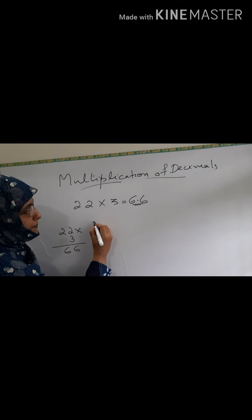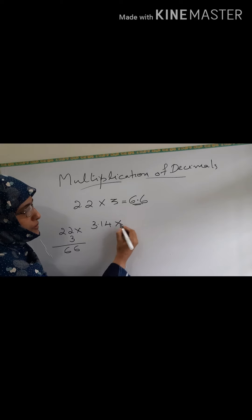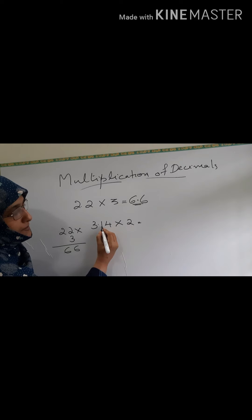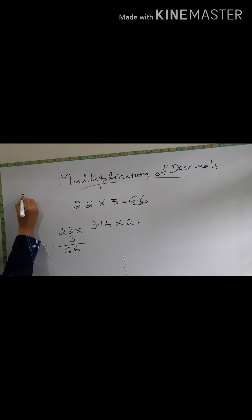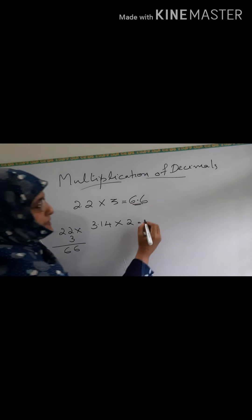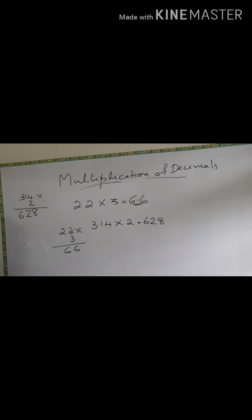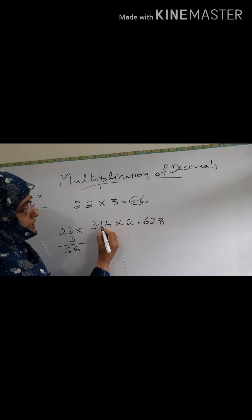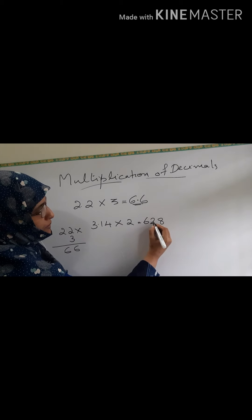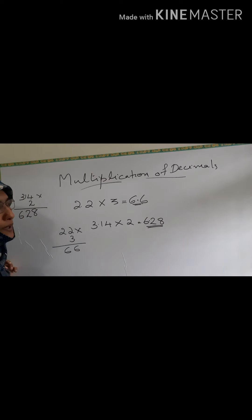Now see another example: 3.14 into 2. Here after the decimal there are 2 digits. When you multiply, take the number without the decimal — that is 314 into 2. So 314 into 2 is 628. In 628, where will you put the decimal? After the decimal there are 2 digits, so from the right side, take 2 digits and insert the decimal. The answer will be 6.28.